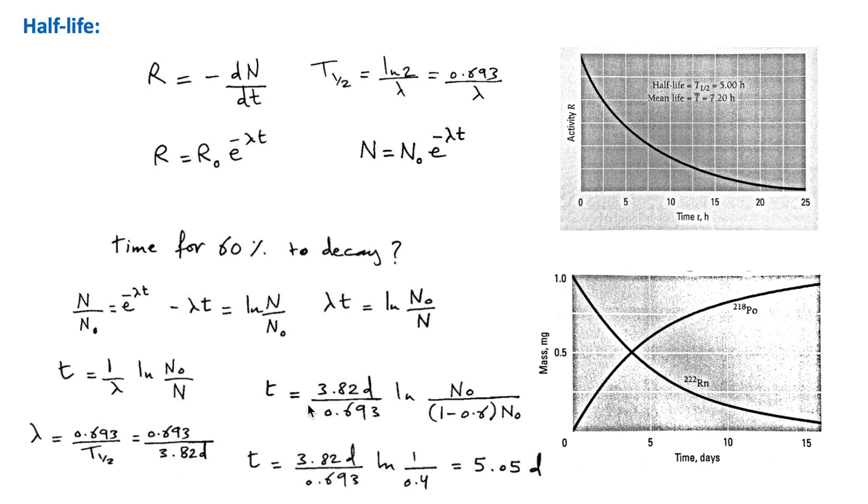T here will be equal to this value, ln of n naught over n. So n is the remaining undecayed nuclei. The remaining is 1 minus 0.6 of n naught. So the remaining is 40% of the initial number of nuclei, and this gives t equals 5.05 days.